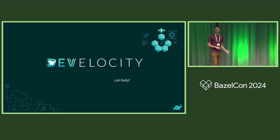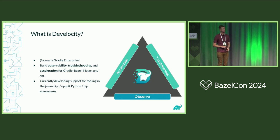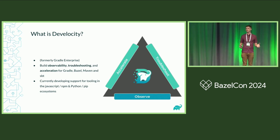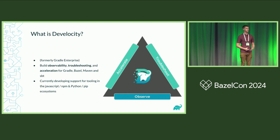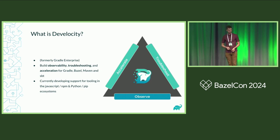Shameless plug number two: DevLocity can help. What is DevLocity? It's a self-hosted, web-based observability and acceleration platform, formerly named Gradle Enterprise. We renamed it because it is not an enterprise commercial version of the Gradle build tool — in fact, we support multiple build tools including Maven, Gradle, Bazel (which is why we are here), and SPT, and we are looking at adding support for JavaScript and Python ecosystems like NPM and PIP. We support both observability and troubleshooting, as well as acceleration technologies through remote cache, test distribution, and predictive test selection for some of the other build tools.